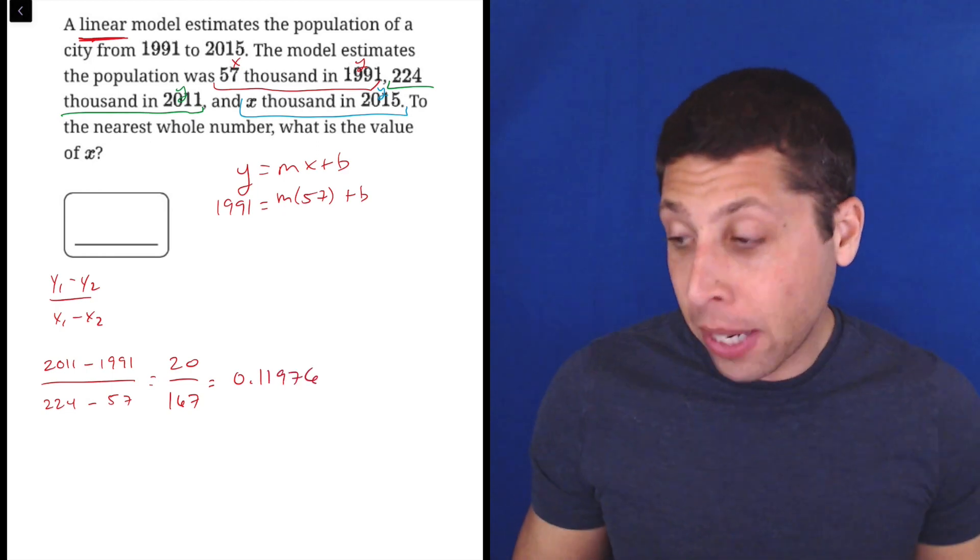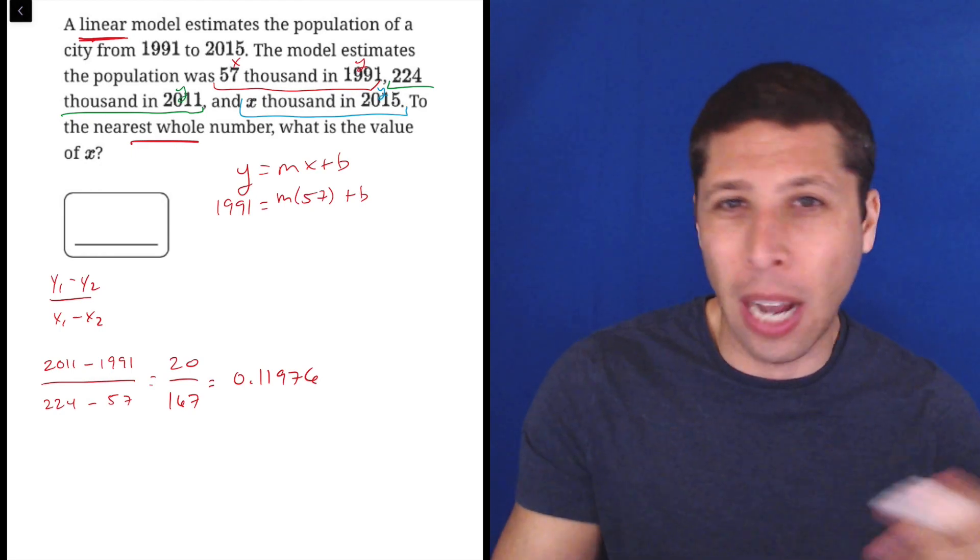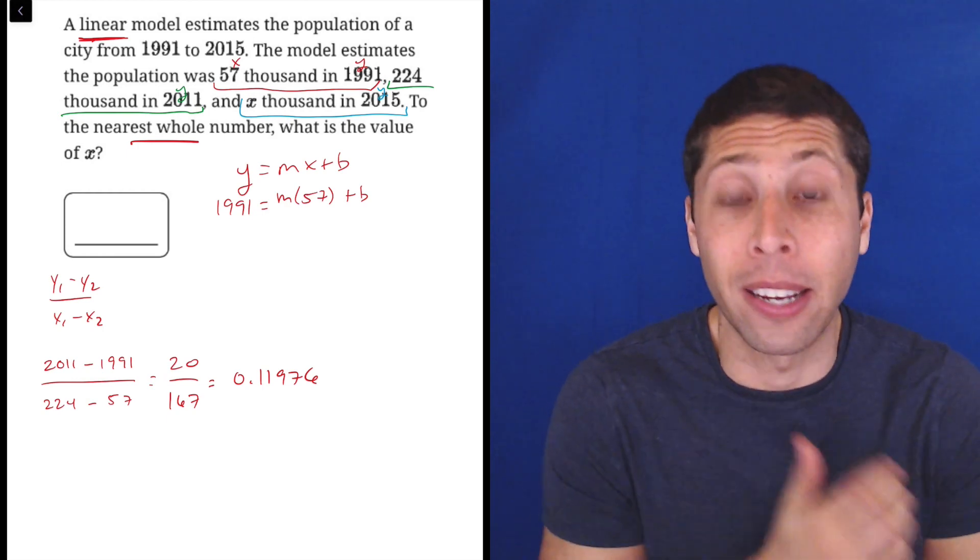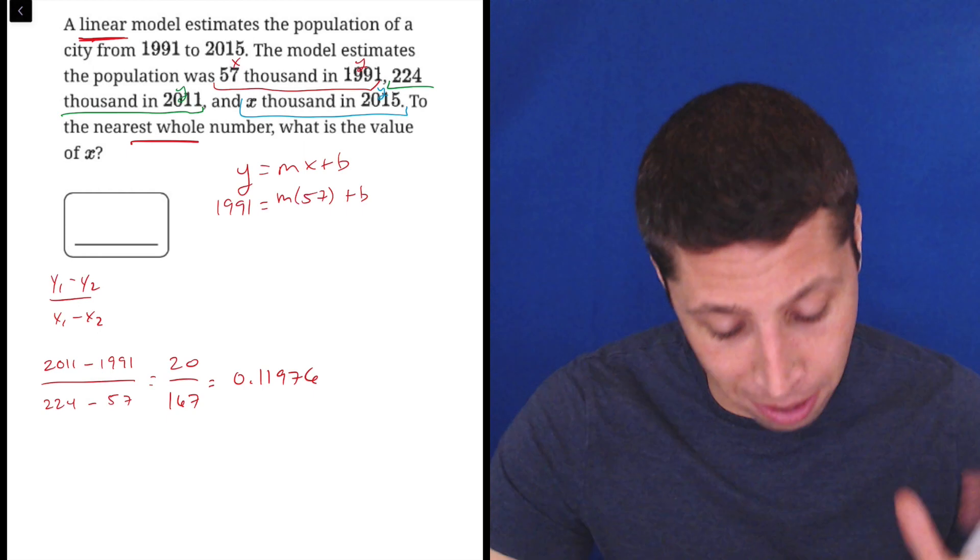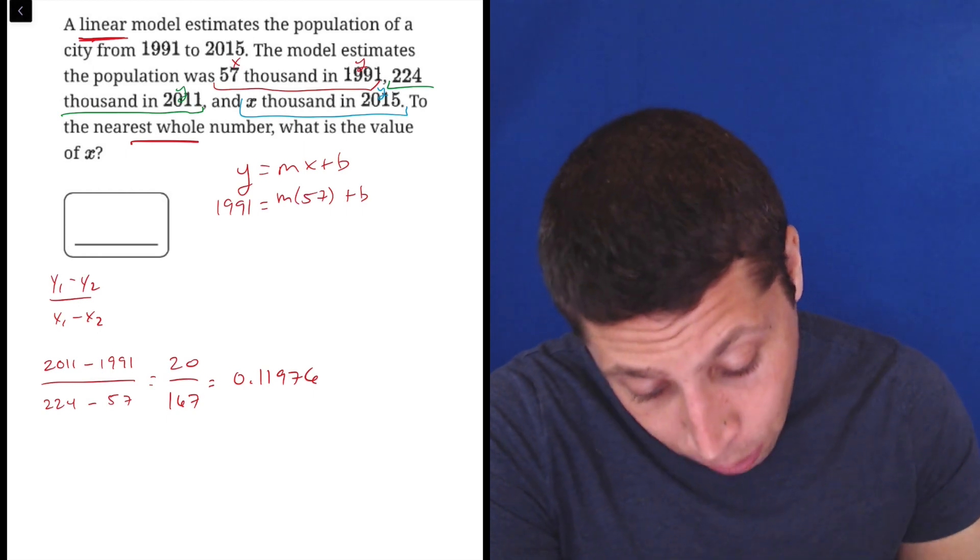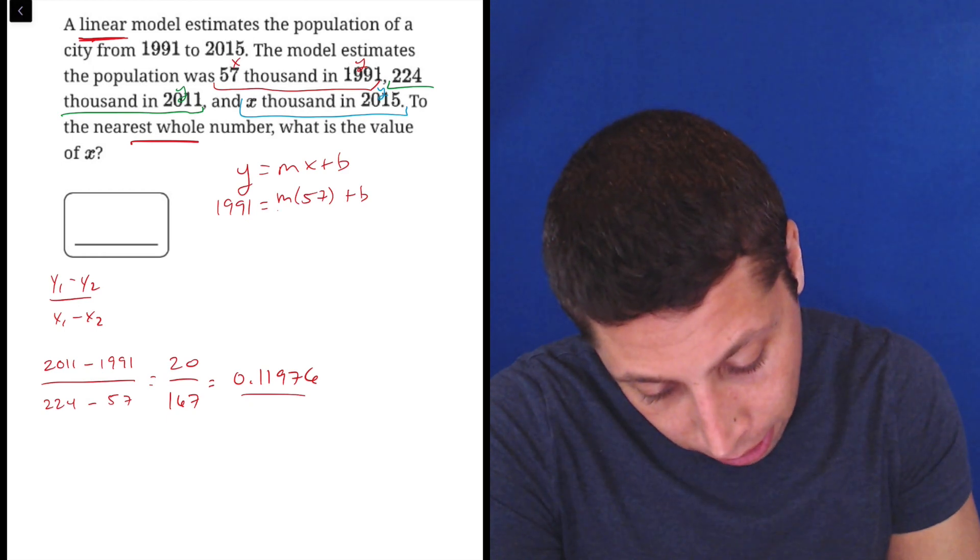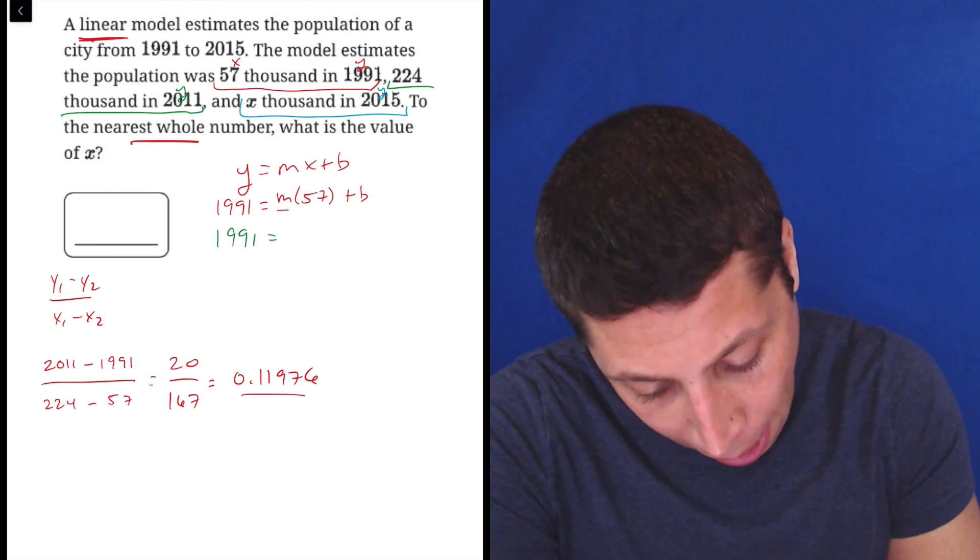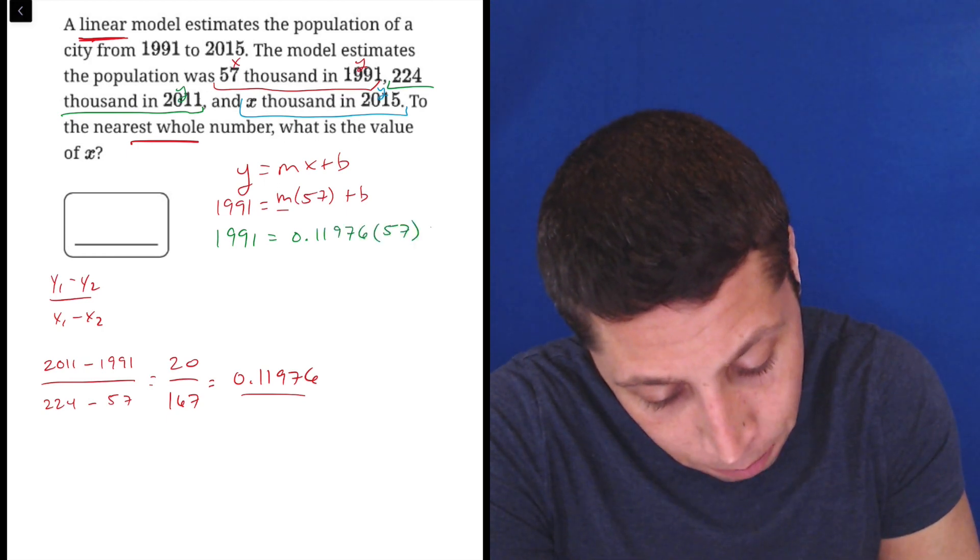And then we can do that. 20 divided by 167 is 0.11976. And it goes on, but I don't really care because at the end I'm going to have to round this thing anyway. So I'm just giving myself a couple of decimal points so that I'm really sure I'm getting where I need to be, but I'm probably even being a little too cautious here. You could probably round to like the nearest hundredth and be fine, but let's just do that. So now we have another piece that we can plug back into that original formula, right? So this slope can go in for this slope here. So let's change colors so we can kind of see better what's going to happen. 0.11976 times 57 plus b.